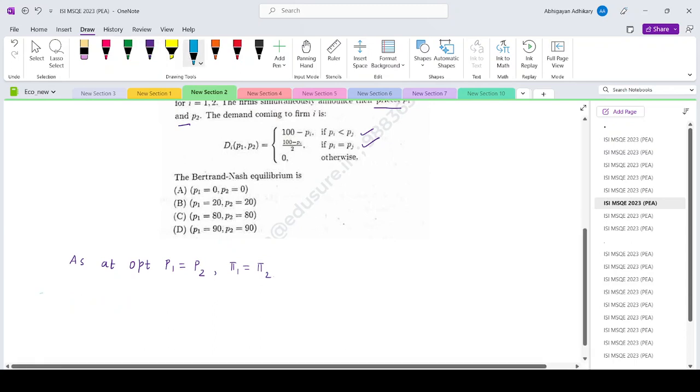Let us take the first case: P1 equals P2 equals 0. In that case, what would be the profit of firm 1? It's basically, price is 0.